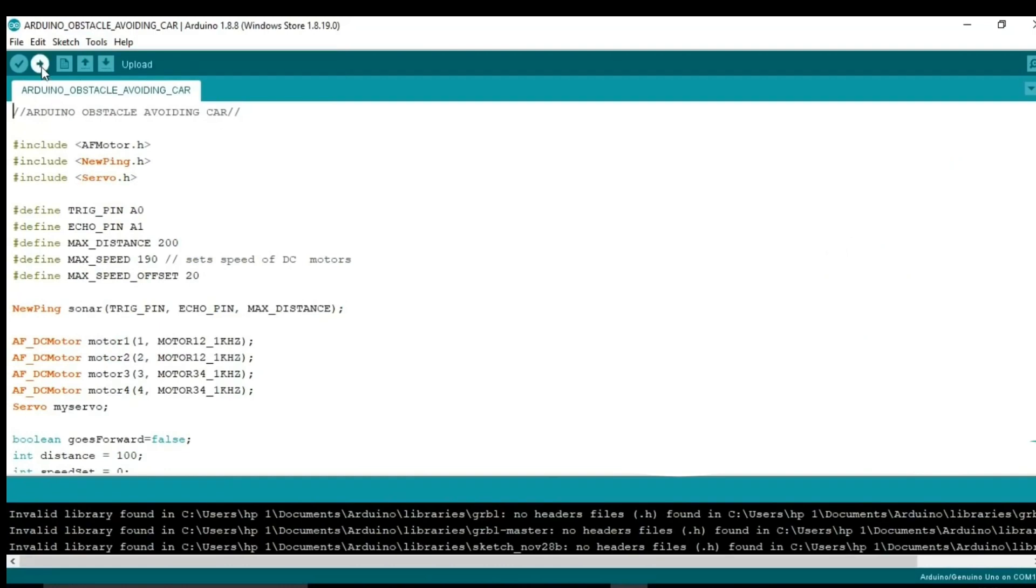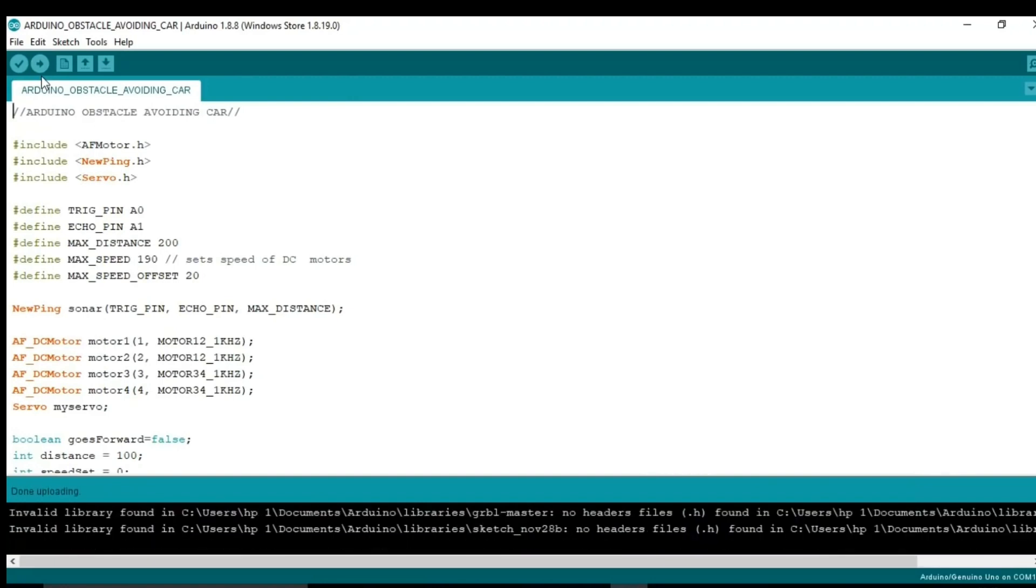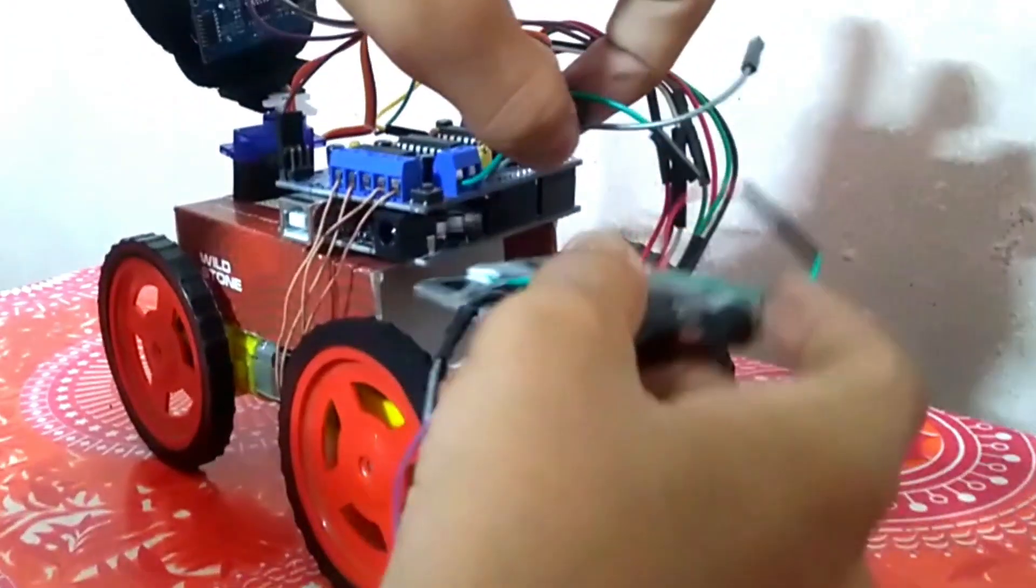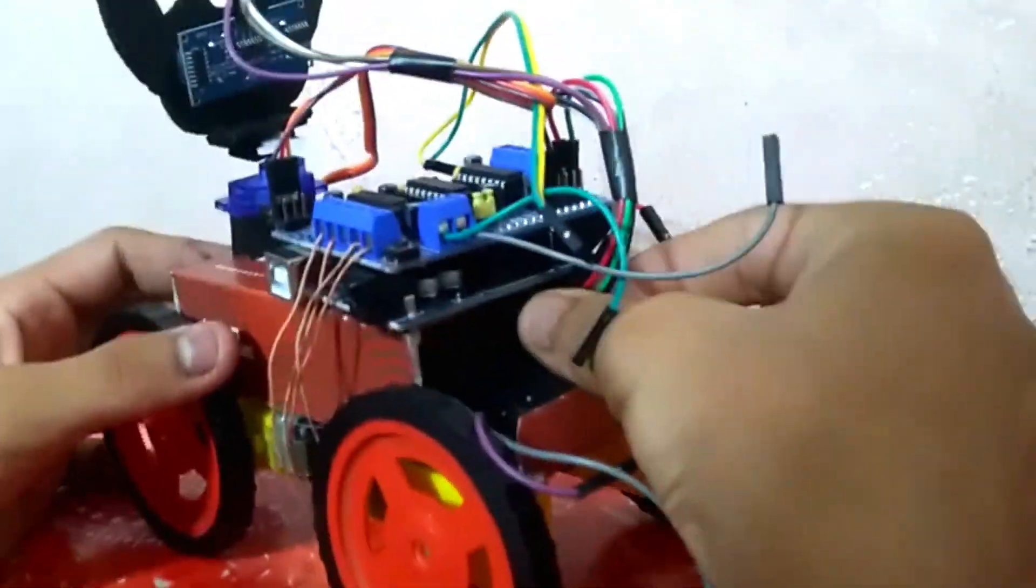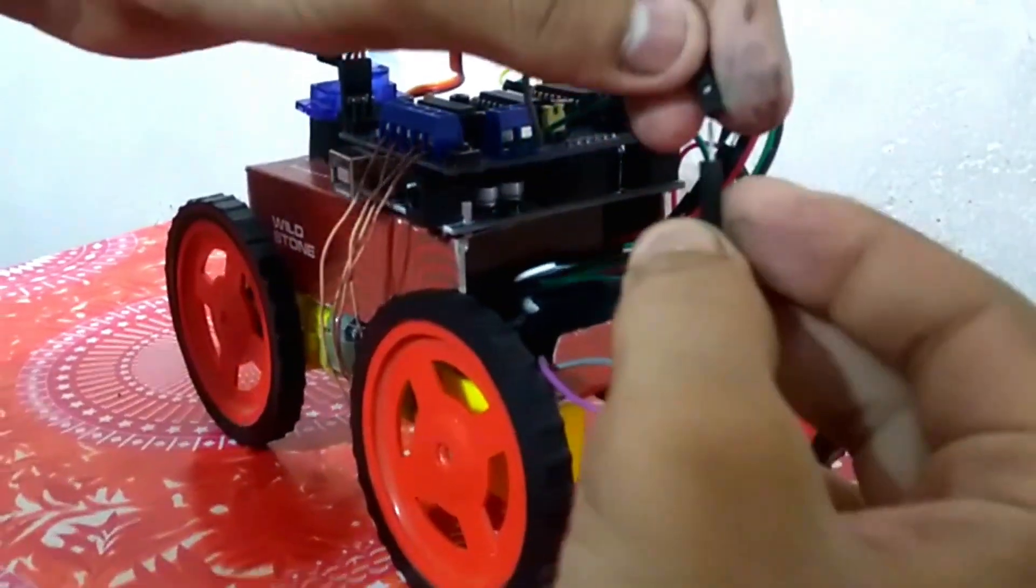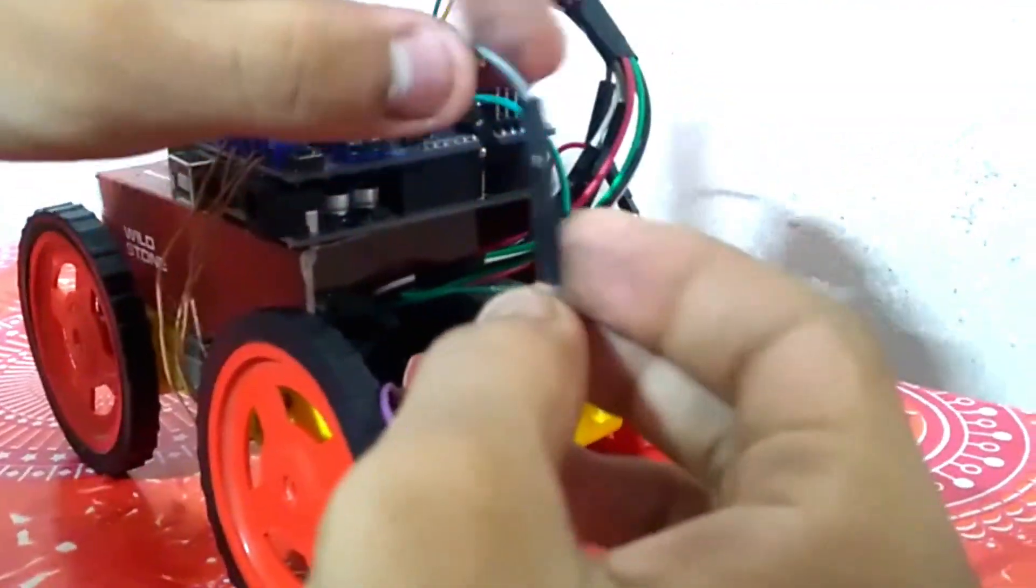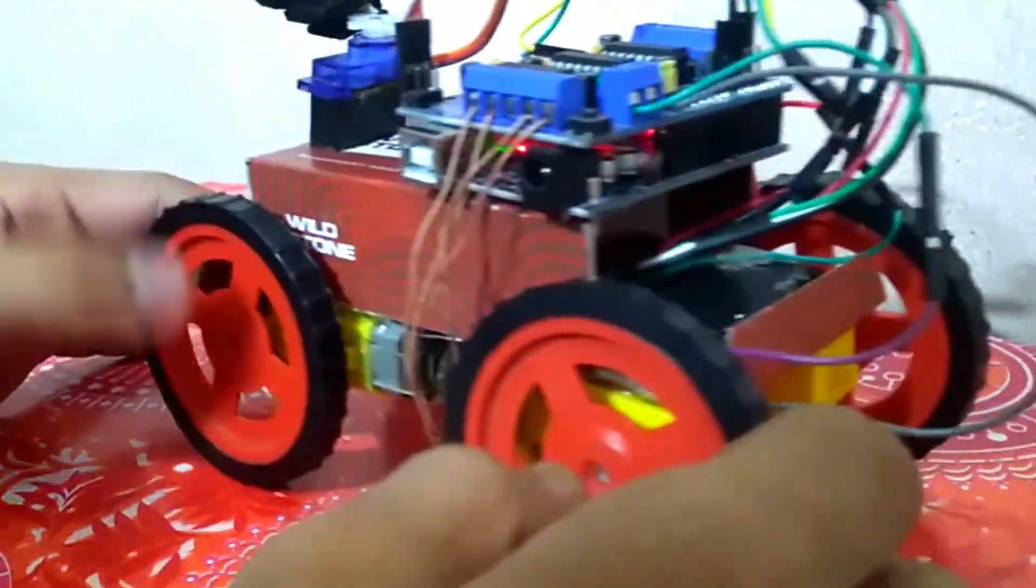Once we are done with all the programming work, we just need to connect the battery. Here I'm using two batteries in series, so basically they add up to 8 volts. And now our car is ready to go.